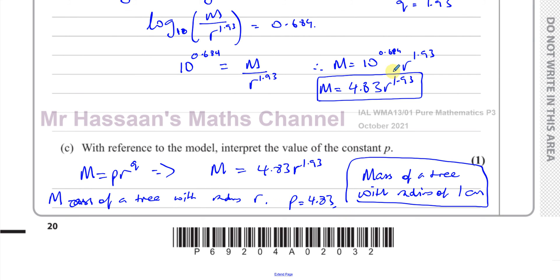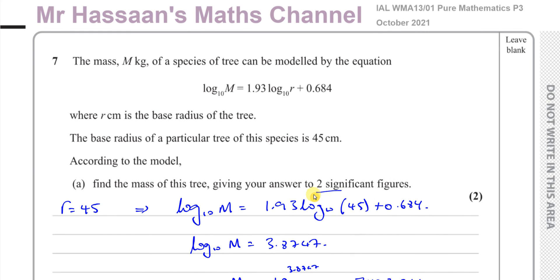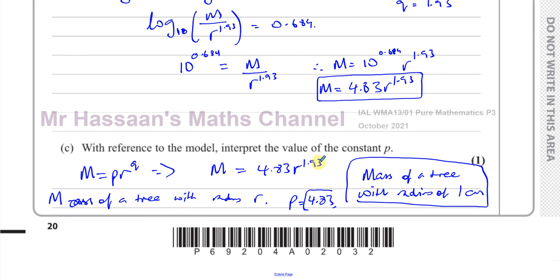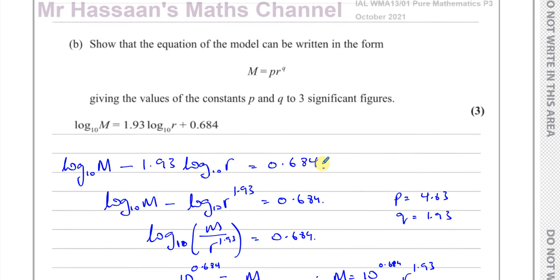Many students, when I marked mock papers, said p is the initial mass of the tree — but there's no time involved here, only radius and mass. You can't say it's the initial mass. You need to think about what value of r makes the mass equal to 4.83. That's r equals 1, so p is the mass of the tree when r equals 1 centimeter. This is slightly different from the usual case where we're used to exponential decay with time, where setting t equals zero leaves just the constant.